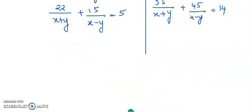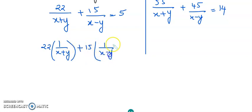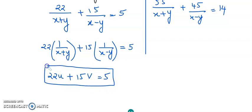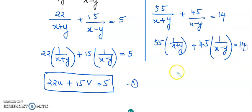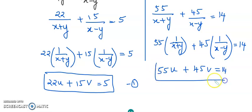Now I am going to write the numerator and denominator separately. The first equation becomes: 22 times 1 upon x plus y, plus 15 times 1 upon x minus y, equals 5. Since 1 upon x plus y is u and 1 upon x minus y is v, I get my first equation in terms of u and v. The second equation is: 55 times 1 upon x plus y, plus 45 times 1 upon x minus y, equals 14 — which gives 55u plus 45v equals 14.